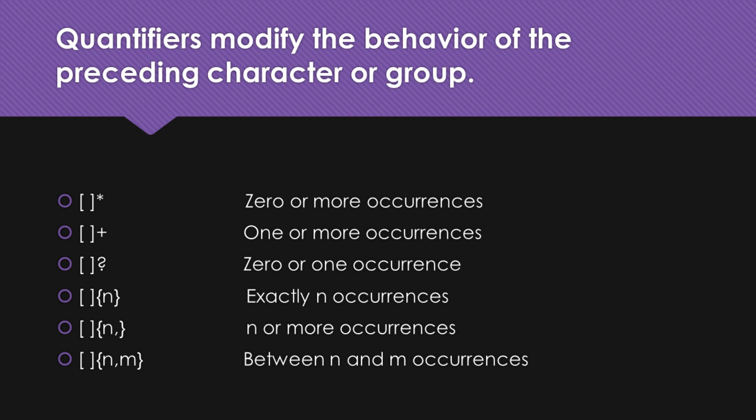Now, let's move on to the plus symbol. When we use it after a character or a group, it means that the preceding item must occur at least once, but it can repeat any number of times — in other words, it represents one or more occurrences. Next, we have the question mark symbol, which indicates zero or one occurrence. When we add it after a character or a group, it means that the preceding item is optional — it can occur either once or not at all.